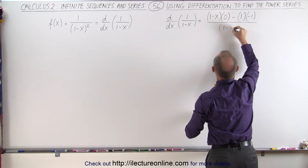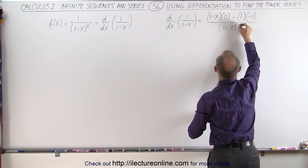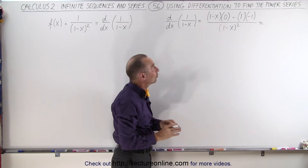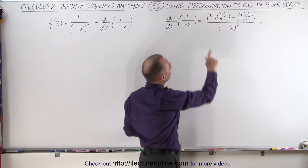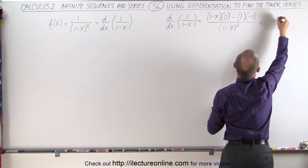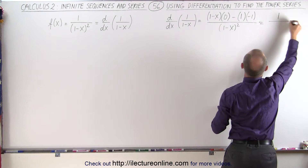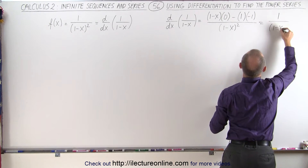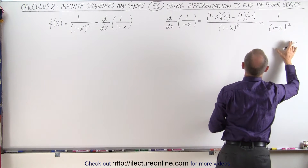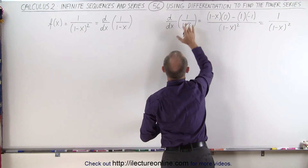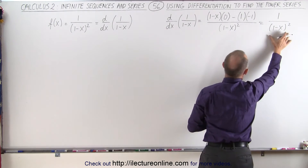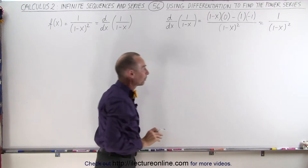Which is 1 minus x quantity squared. When we simplify that, notice we get 0, minus times minus is plus, or 1 over 1 minus x quantity squared, which shows that the derivative of 1 over 1 minus x is equal to the function that we started with.